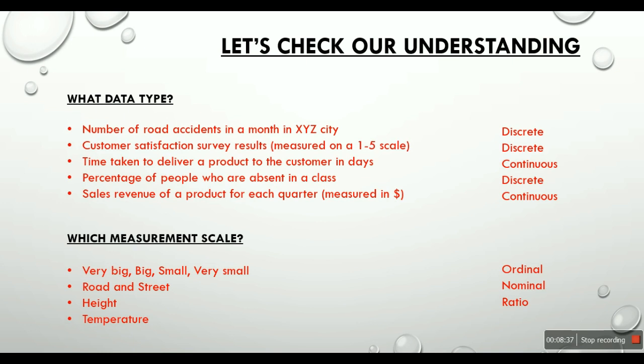The last one is temperature. So temperature has an identity. Temperature has a magnitude. Temperature has an interval. But it can also go below zero. So it cannot be ratio. We have to stop at interval. So temperature is an interval scale of measurement.